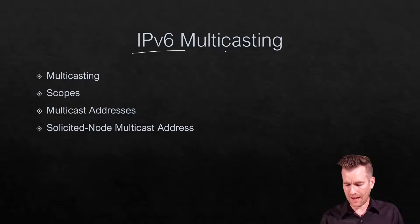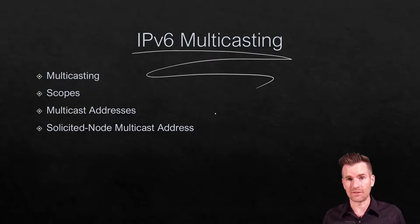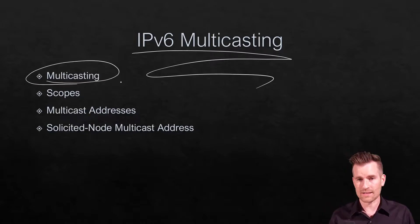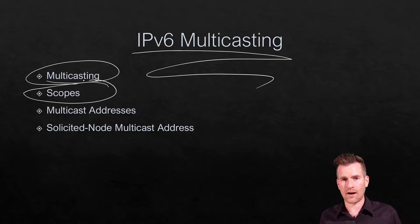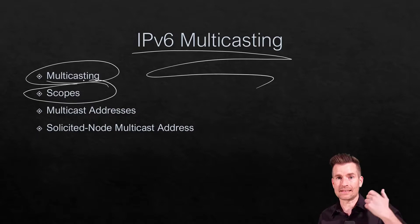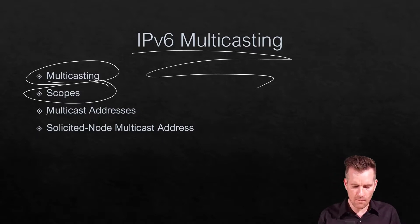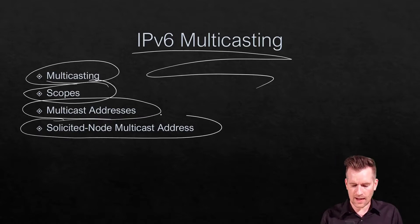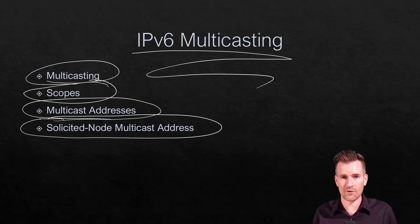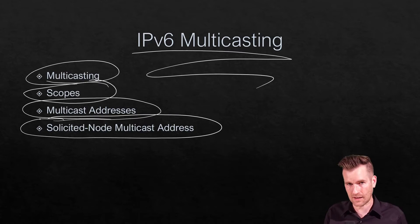Multicasting is pretty cool stuff and it's really necessary for IP version 6. We went over a lot of concepts, starting from what multicasting is and how it works, then got into the scopes and how far those multicasts will be sent within your networks. Then we talked about multicast addresses and what they look like, and finished up with the Solicited Node Multicast Address, which we'll discuss further when we get into the neighbor discovery protocol.